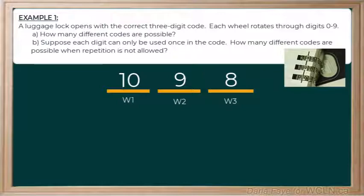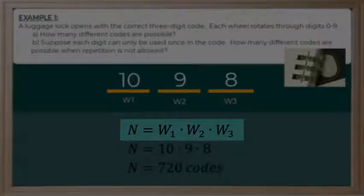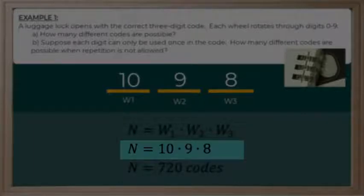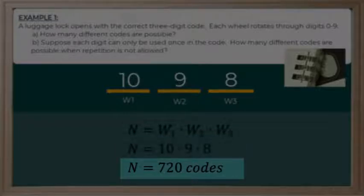Again, I can use the Fundamental Counting Principle to calculate the total number of codes when selecting a digit for wheel 1 and wheel 2 and wheel 3. Using the same formula where n represents the total number of codes and W1, W2, and W3 represent the possibilities for each wheel, I multiply 10 times 9 times 8 to give me 720 possibilities for codes.